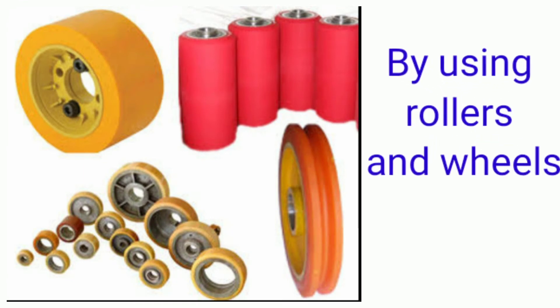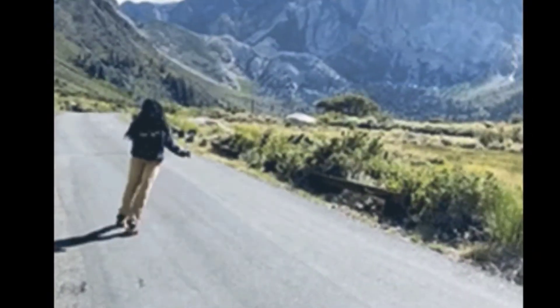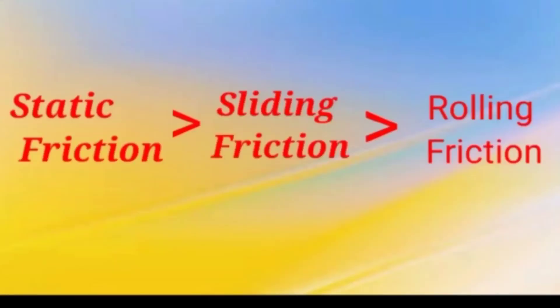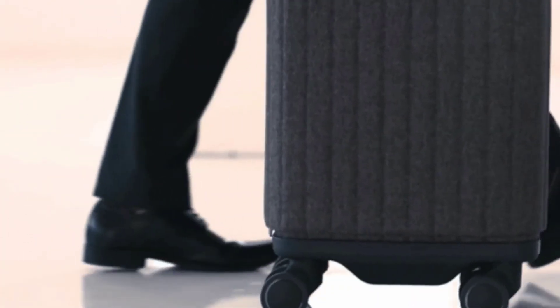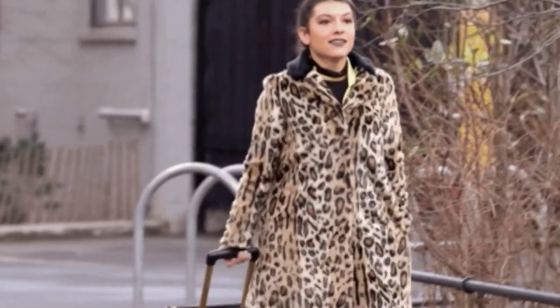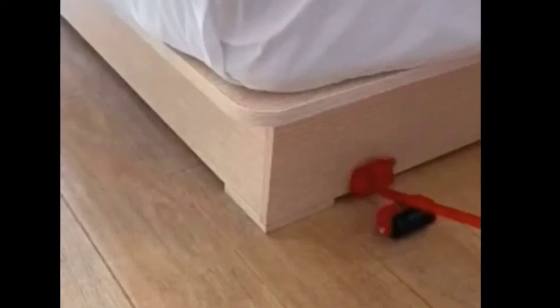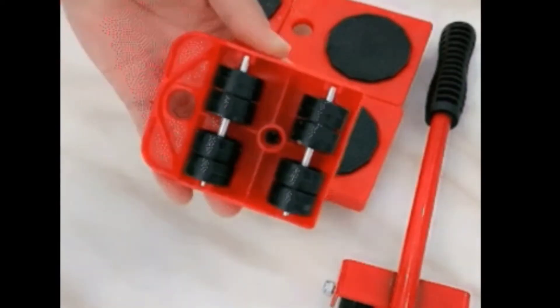Fifth, by using rollers and wheels. Use of wheels between surfaces moving over each other reduces friction. We know that rolling friction is very less than sliding friction between the two surfaces in contact. Due to this reason, many heavy objects such as suitcases and traveling bags are provided with small wheels called rollers. The rollers reduce friction and help in moving heavy objects easily from one place to another.